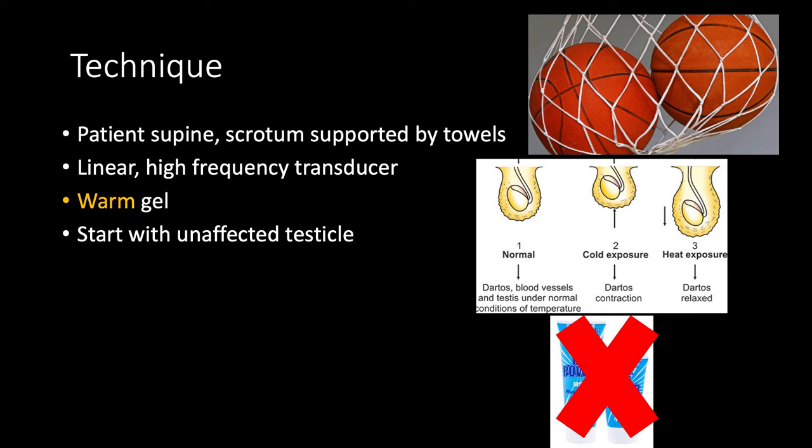For scanning technique, the scrotum needs to be supported — usually by towels — with the patient supine. Use a linear transducer since these structures are superficial, and use warm gel, because cold gel will cause the cremaster muscle to retract the testicle, making it difficult to find. Always start with the unaffected testicle first, and absolutely no cold gel.